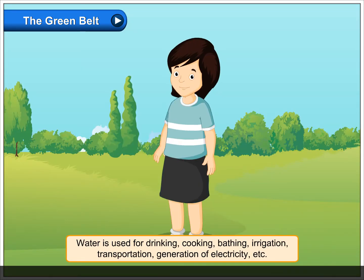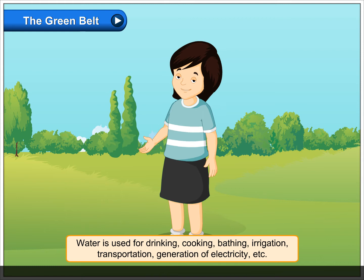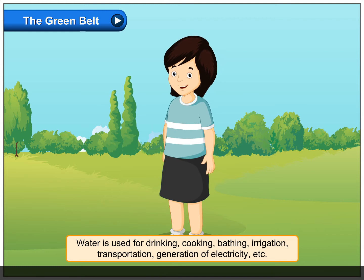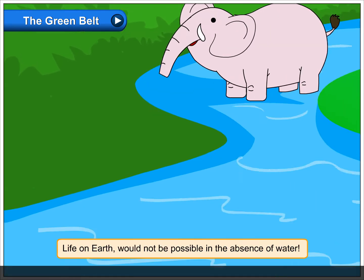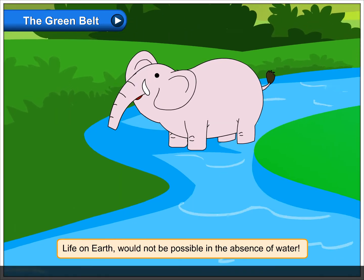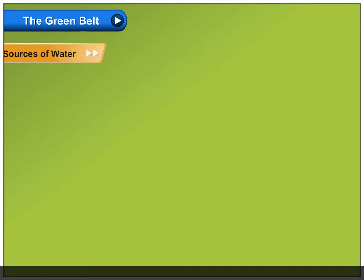Water is used for drinking, cooking, bathing, irrigation, transportation, generation of electricity, etc. Life on Earth would not be possible in the absence of water. Sources of water.